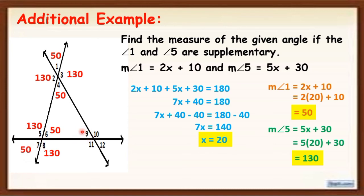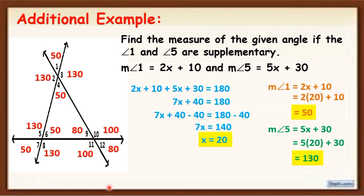Now we are going to find the measure of angle 9. Remember that the measure of a triangle is 180. We have 50 here and 50 here, so that is 100 already, therefore the measure of angle 9 is 80 degrees. Since angle 9 and angle 12 are vertical angles, the measure of angle 12 is also 80 degrees. Angle 10 and angle 12 are supplementary, so the measure of angle 10 is 100 degrees. The measure of angle 11 is 100 degrees because angle 10 and angle 11 are vertical angles.